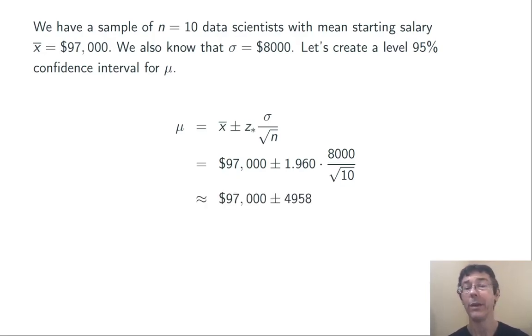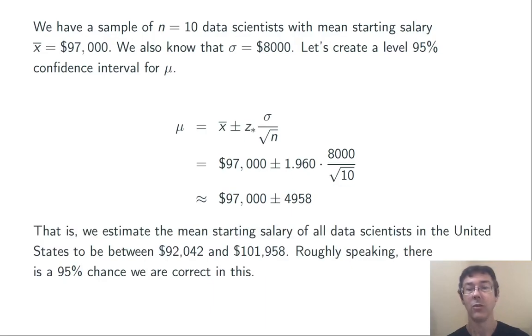Simplifying all of that, we get $97,000 plus or minus $4,958.